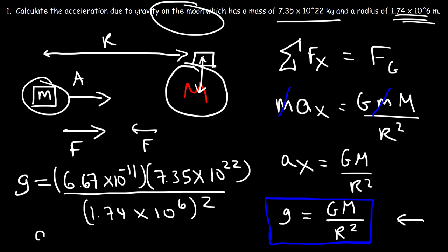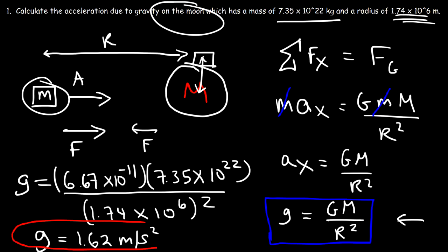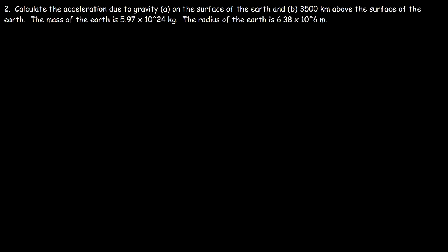The gravitational acceleration on the moon, based on this information, is about 1.62 meters per second squared. Now let's move on to the next problem.